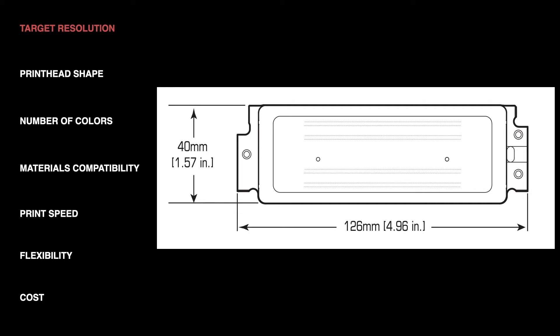You can see the image here is from a Dimatic Starfire SG1024 printhead. There are eight different rows of nozzles. Each of the rows is 50 DPI, so 50 nozzles per inch. Each row is slightly offset from each other. So when you add up all those eight rows slightly offset, the overall DPI of the head is 400.